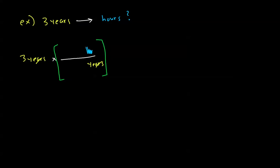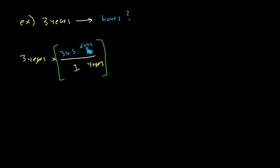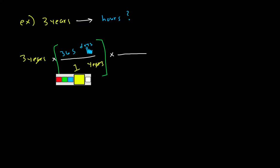I know that one year is 365 days. So I put 365 days on top for every one year on the bottom. If I did this calculation now I'd get how many days are in 3 years — 3 times 365. But I don't want days, I want hours, so I have to keep going. Right now we have days, and this was all over 1, which is how we know what's on top and what's on the bottom.